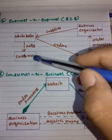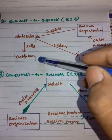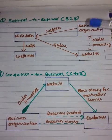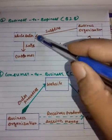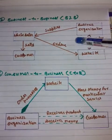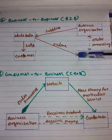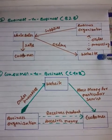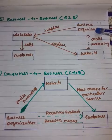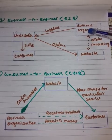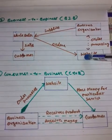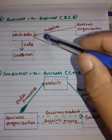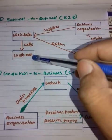In B2B there is a retailer who is the customer, and the retailer then sells to end customers. The business organization supplies to wholesalers, wholesalers supply to the retailer, and retailers supply to customers. Customers do not directly order from the business organization's website; instead, wholesalers go through the website, order from the business organization, and receive their delivery of goods.